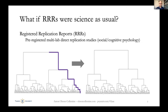These registered replication reports in psychology and other fields really aim to pick a seminal study. They are registered reports, so they're all assessed prior to the study itself. A very strict protocol is then implemented and the study is run in multiple labs. This is nice because now we have an awful lot of data, thanks to the hard efforts of all these contributing labs.